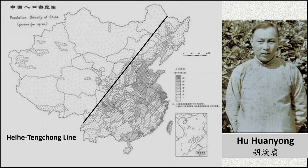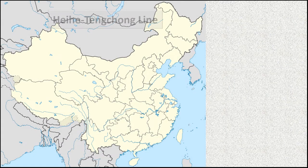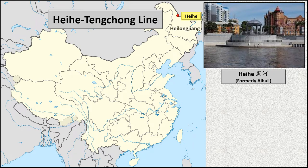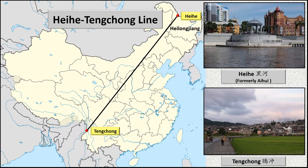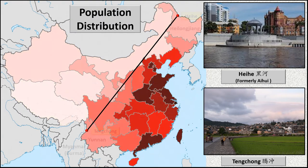Known as the Heihe-Tongchong Line, it is also sometimes called the Hu Huanyong Line to honor its creator, or even simply the Hu Line. The line starts at Heihe, at the northern border of Heilongjiang province, and runs southwest to Tengchong, a city in Yunnan province on the border with Myanmar. The great majority of people live to the southeast of this line.